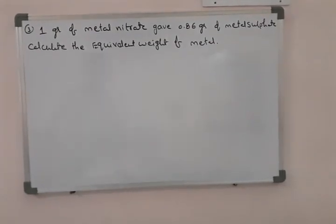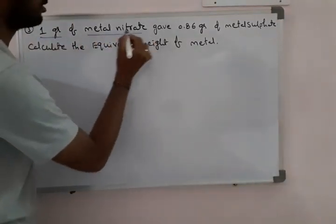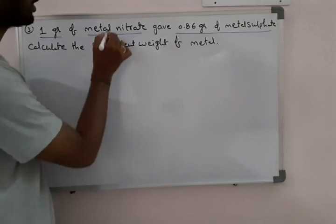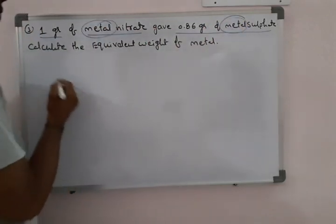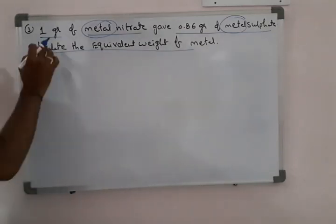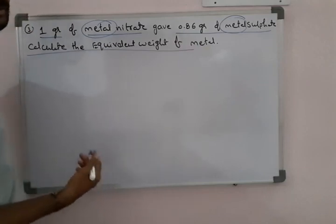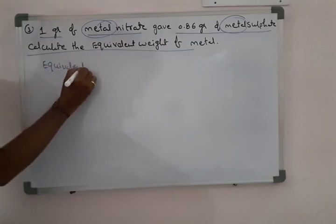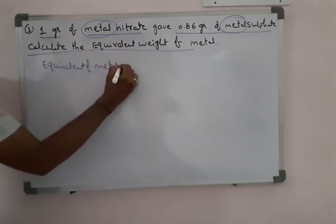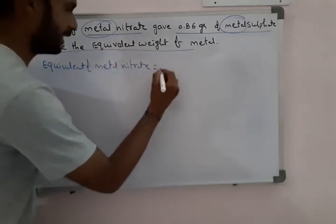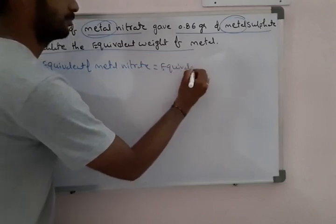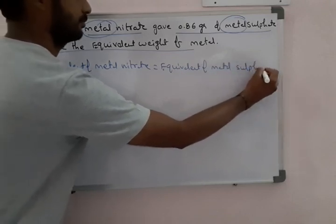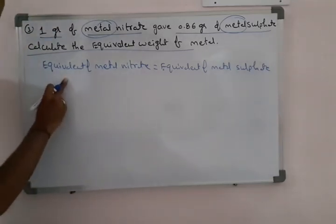See the next problem: 1 gram of metal nitrate gave 0.86 grams of metal sulphate. These are totally different compounds but both belong to the same metal. We need to calculate the equivalent weight of that metal. Since metal nitrate gives metal sulphate, we write that equivalence of metal nitrate is equal to equivalence of metal sulphate.